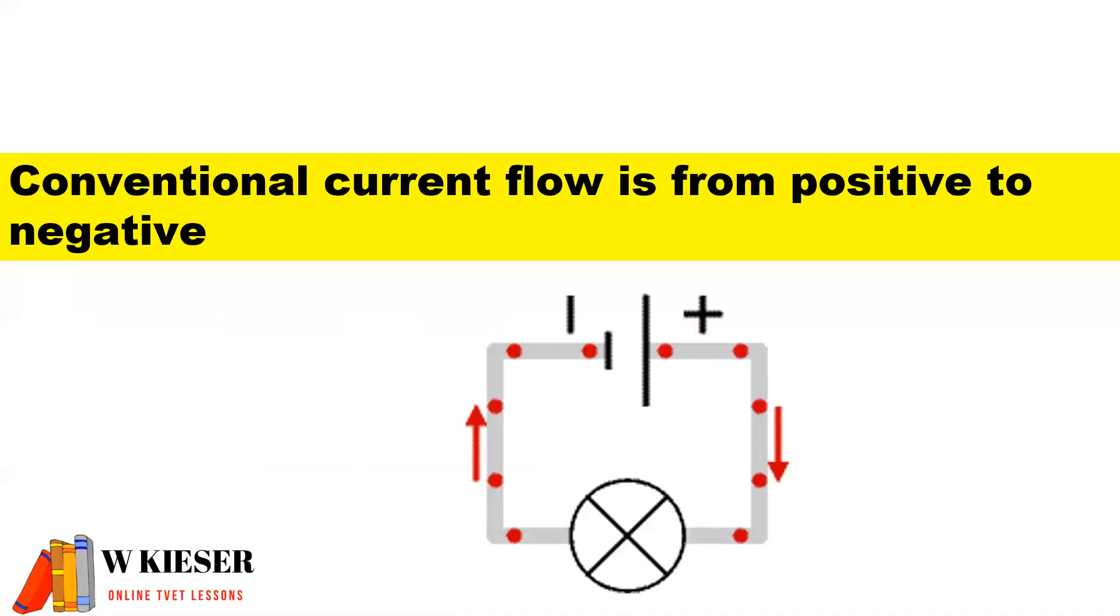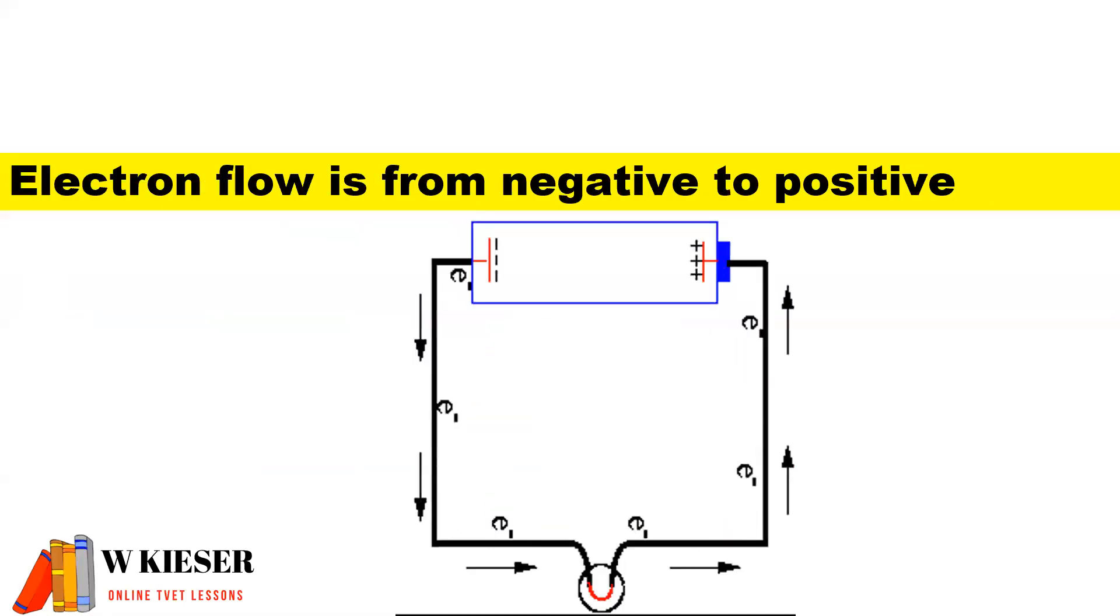Conventional current flow is from positive to negative. Electron flow is from negative to positive.